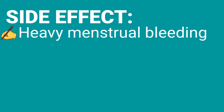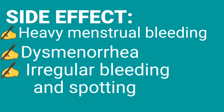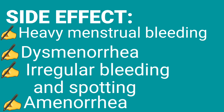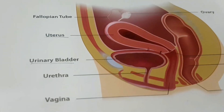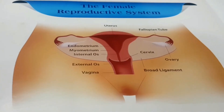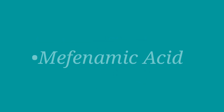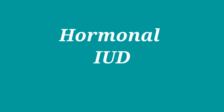Side effects of IUD: heavy menstrual bleeding and dysmenorrhea are likely during the first six months. Following levonorgestrel insertion, irregular bleeding and spotting are common, while oligomenorrhea or amenorrhea is likely by the end of the first year. Heavy menstrual bleeding associated with IUD can be treated with tranexamic acid and NSAIDs such as mefenamic acid. If heavy bleeding is unacceptable, the patient may consider shifting to a hormonal IUD such as Mirena.